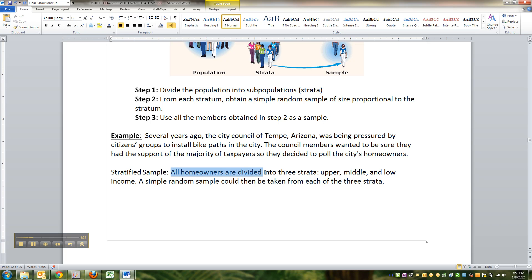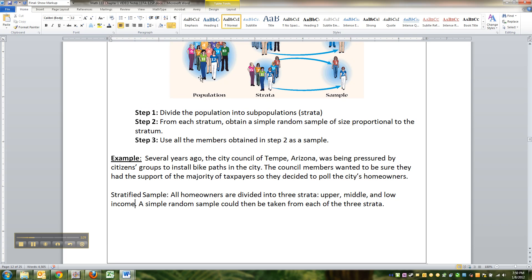So they divided all homeowners into three strata: upper, middle, and low income. So all the upper class, then all the middle class people, and then all the lower class people. And then they got a random sample from each of those groups.